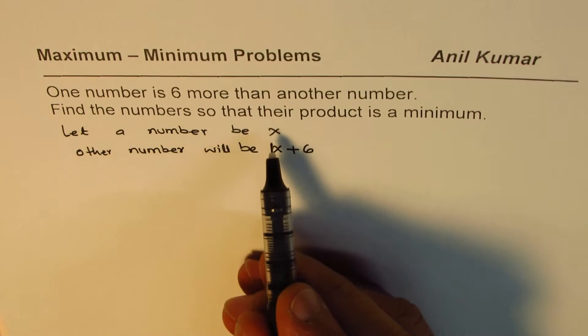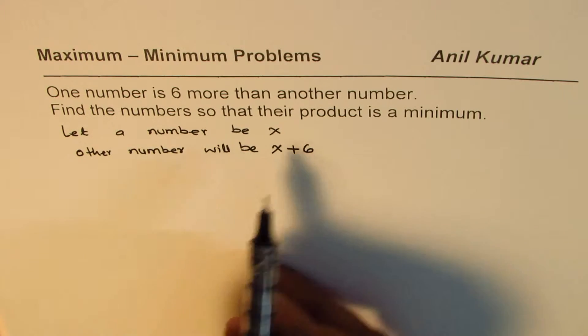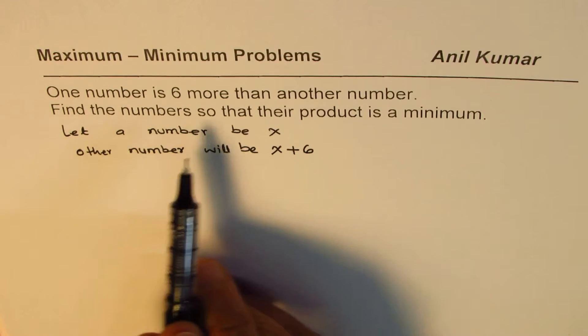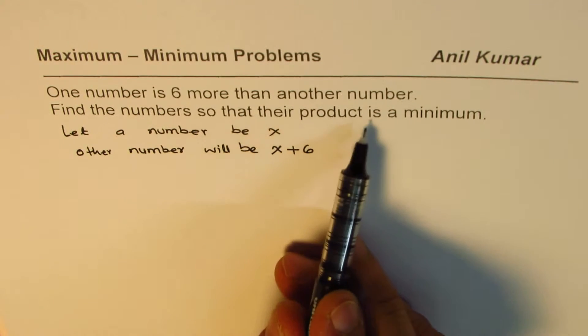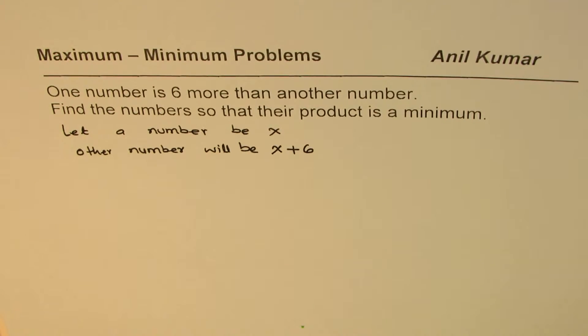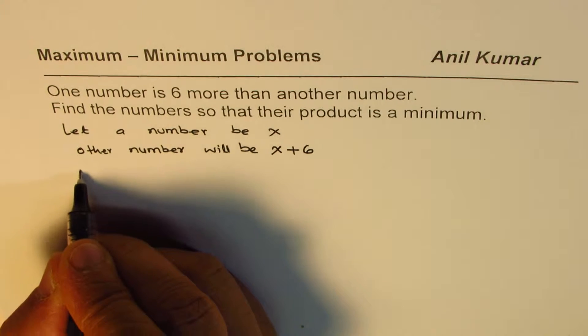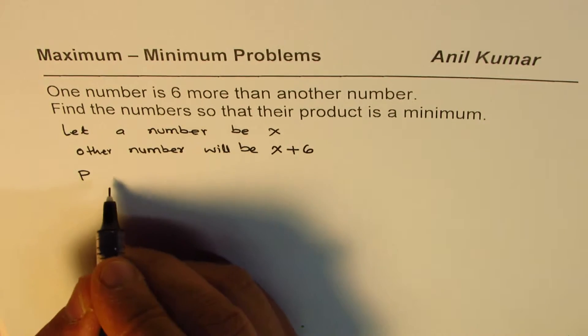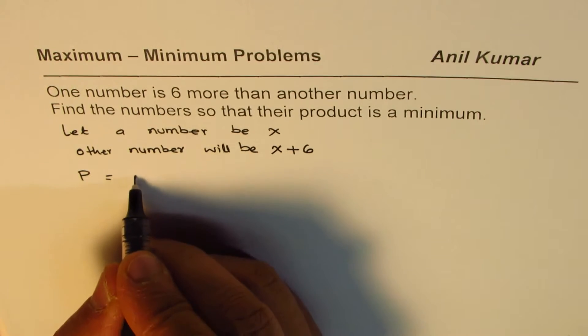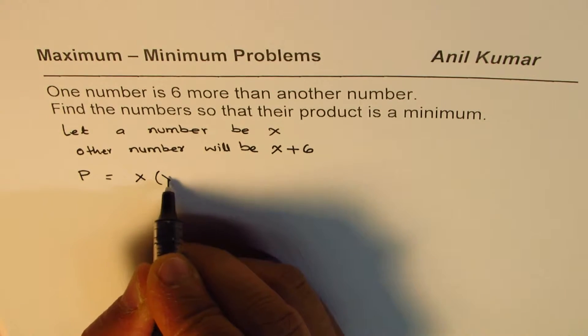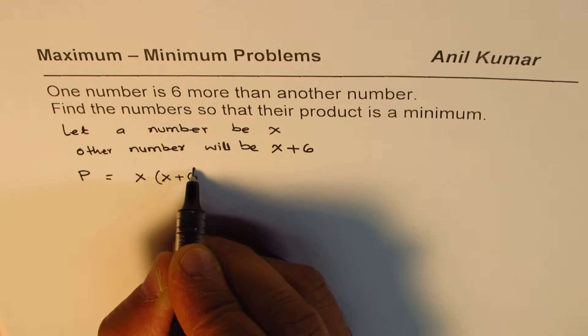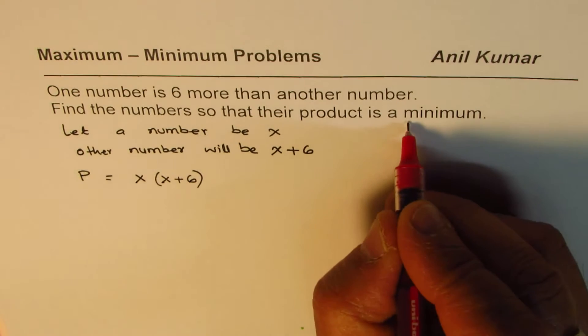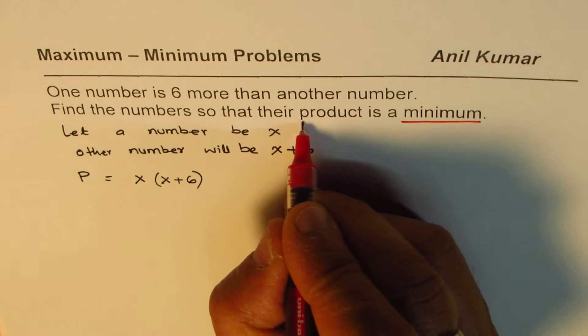Now the question is find the numbers so that their product is a minimum. So we are looking for a product. So let's say P is the product which we want to minimize. Product means you multiply them, that means X times X plus six. That is what the product is. So the question is to minimize the product.